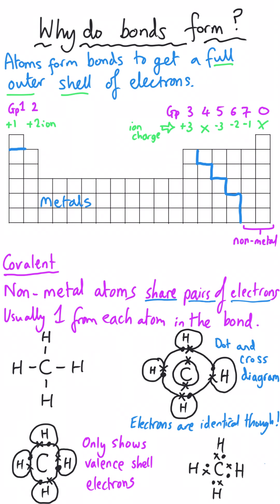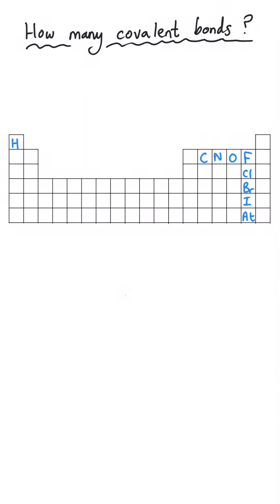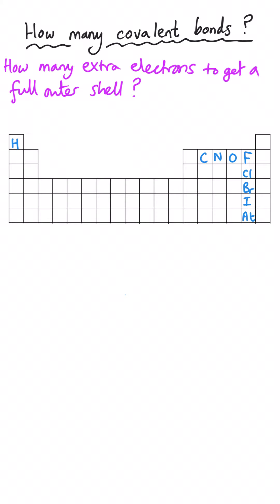All four of these diagrams are showing the same molecule and the same bonding, just in subtly different ways. Not only can we use the periodic table to work out the type of bonding between two elements, we can also work out how many covalent bonds will be present, again by looking at their position in the periodic table.